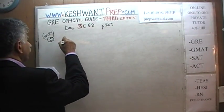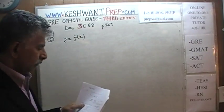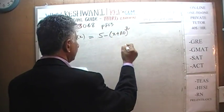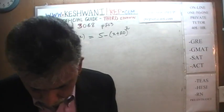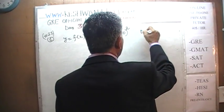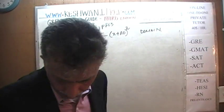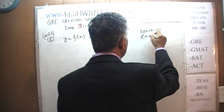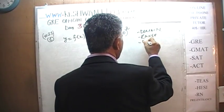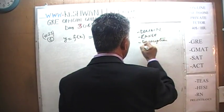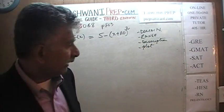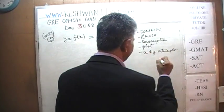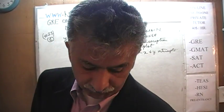We are given a function which looks like this: 5 minus (x plus 20) whole squared. For each of the following functions, we are being asked to give its domain. We will give the domain, the range even though they don't ask for it, a description, plot it, and provide the x and y intercepts. If you can do all of that, we have answered the question.